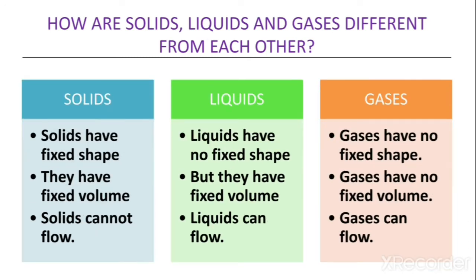Under solids you can write: solids have fixed shape, they have fixed volume, and solids cannot flow. About liquids you can write: liquids have no fixed shape but they have fixed volume, and they can flow. Whereas for gases you can write: gases have no fixed shape, no fixed volume, and they can flow. So these are the three properties of all the three states.